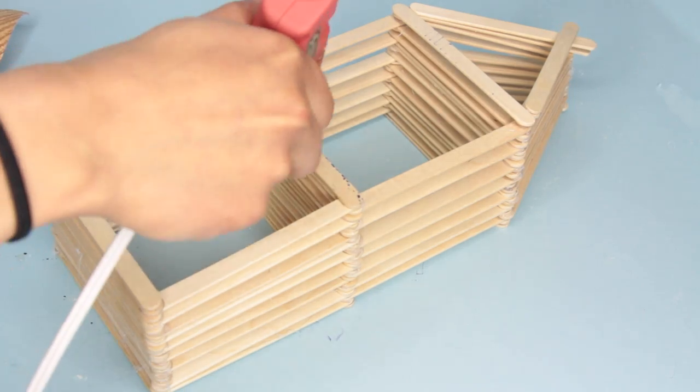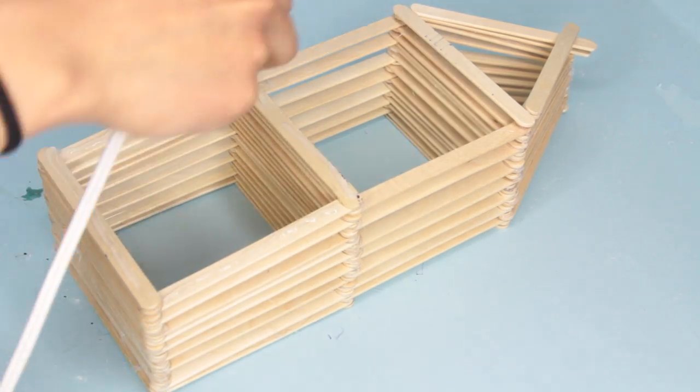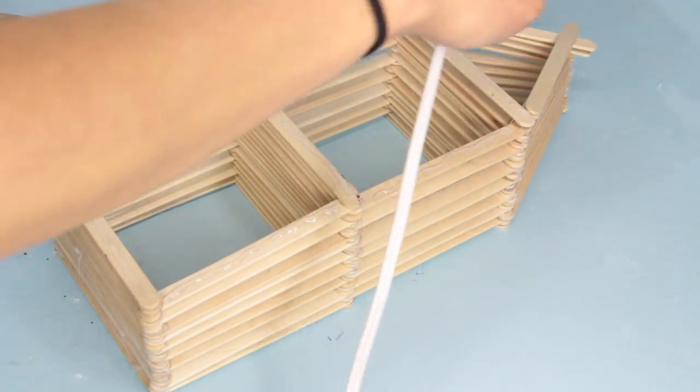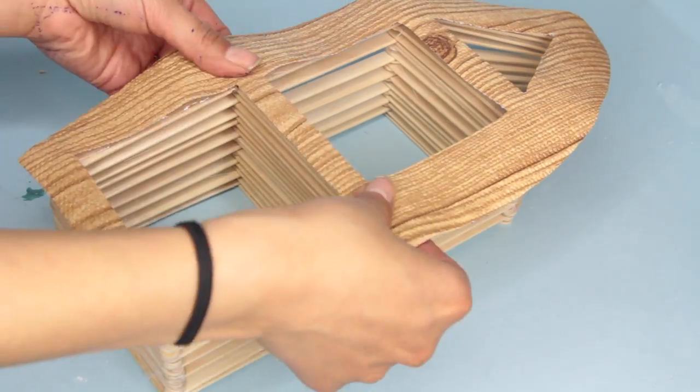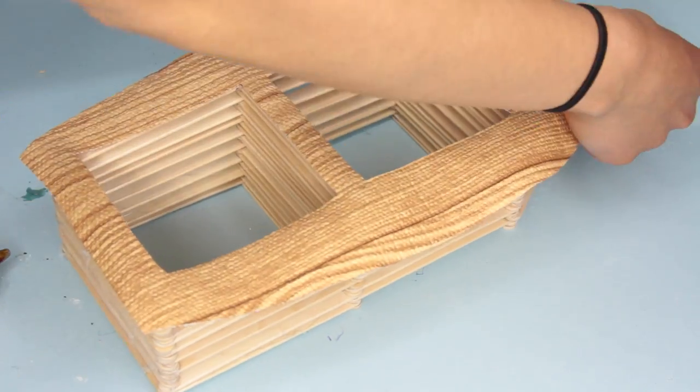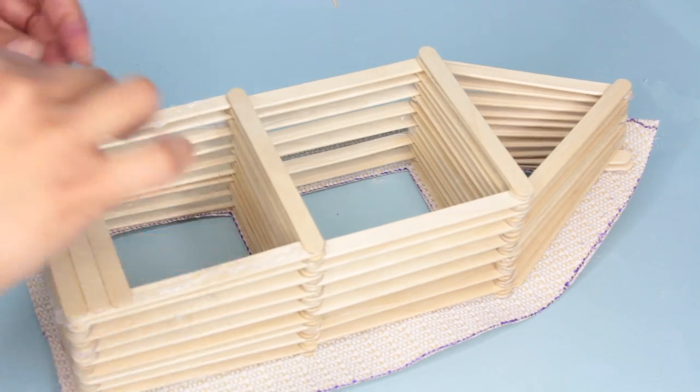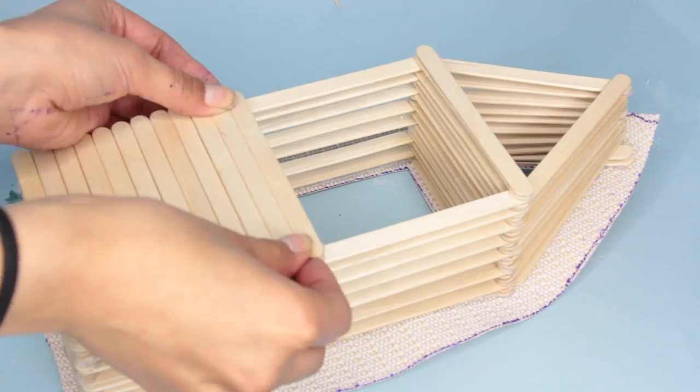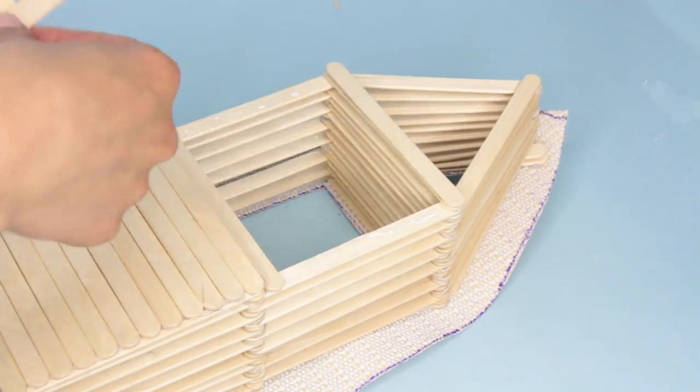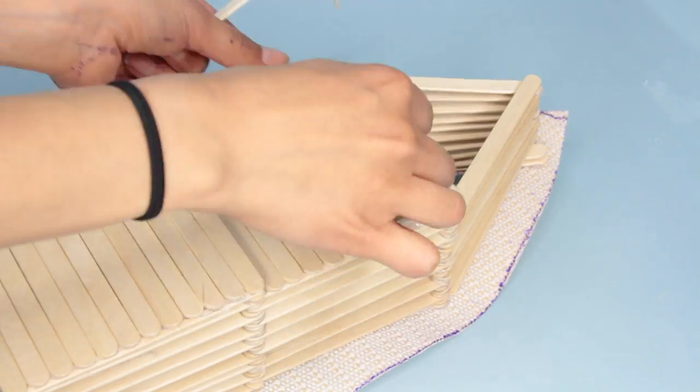Then I glue the vinyl to the popsicle sticks. If the vinyl is kind of lifted and it's not really lying properly on some of the popsicle sticks because there's a gap, just slide a popsicle stick under and then put some glue. And then that way the vinyl will be able to have a really good base under it. After I've done that, I start to put popsicle sticks on the backing of the boat.